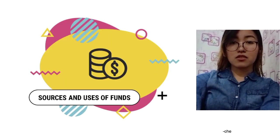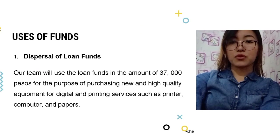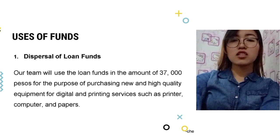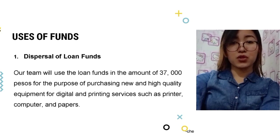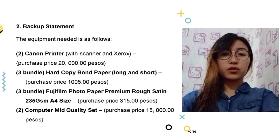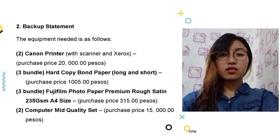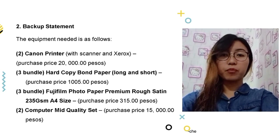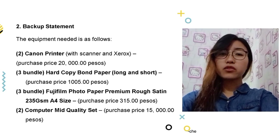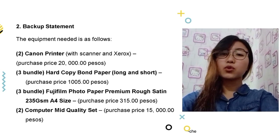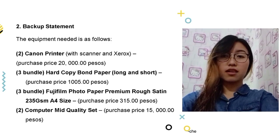Sources and uses of funds — dispersal of loan funds: our team will loan an amount of P37,000 to purchase new and high-quality equipment for digital and printing services, such as printers, computers, and paper. The funds will be used for 2 Canon printers with scanner and Xerox worth P20,000, 3 reams of long and short bond paper worth P1,005, 3 bundles of Fujifilm photo paper A4 size worth P315, and 2 computer sets worth P15,000.